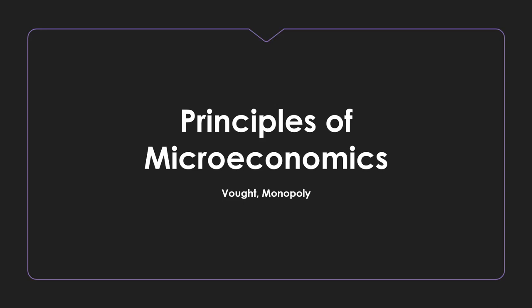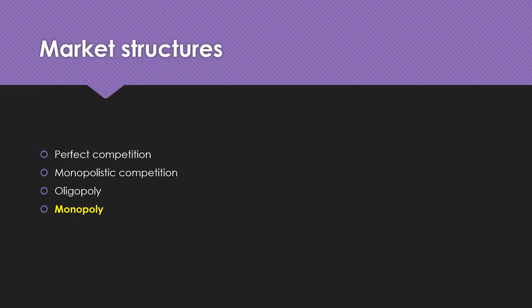Hello class, and welcome to this lecture on monopoly in our course on microeconomics. We are now on our fourth and final market structure. We initially talked about perfect competition, then monopolistic competition, most recently oligopoly, and now we're wrapping up the entire unit by talking about monopoly.